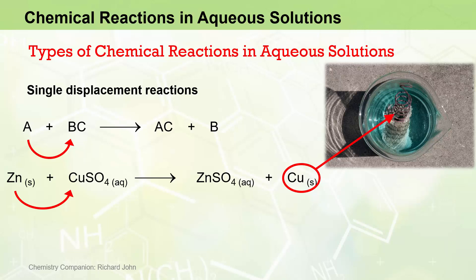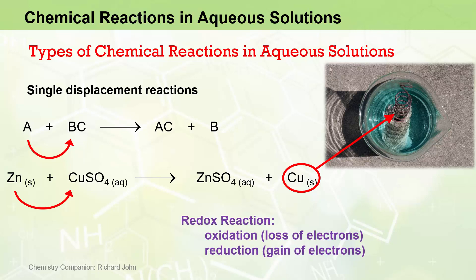Later on, we shall see that this type of reaction can be readily identified as a redox reaction, where one substance undergoes oxidation by losing electrons and another substance undergoes reduction by gaining electrons.